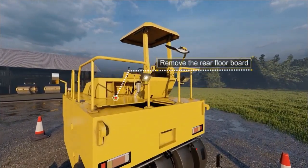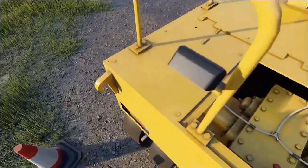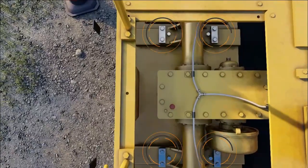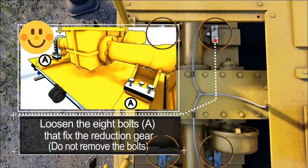Remove the rear floorboard. Loosen the eight bolts A that fix the reduction gear. Do not remove the bolts.